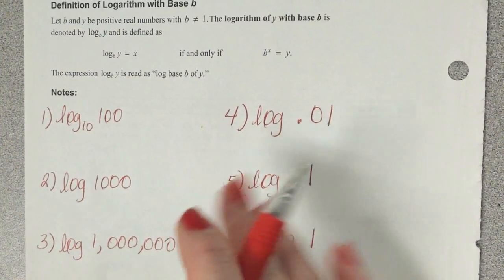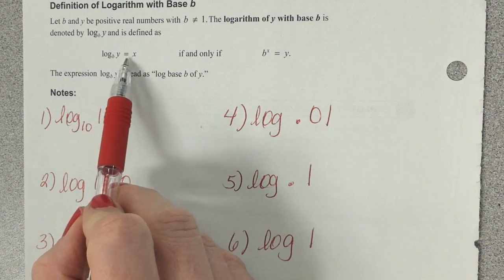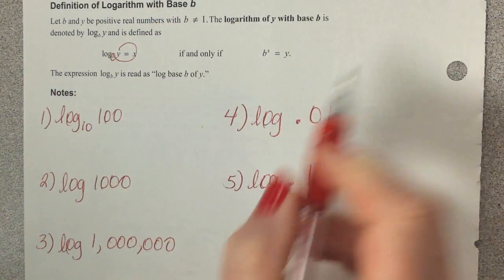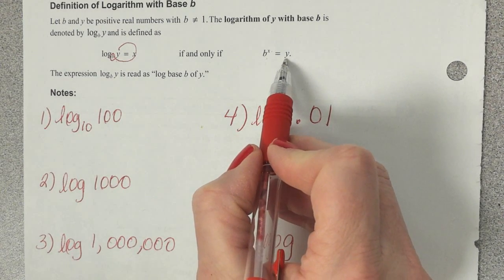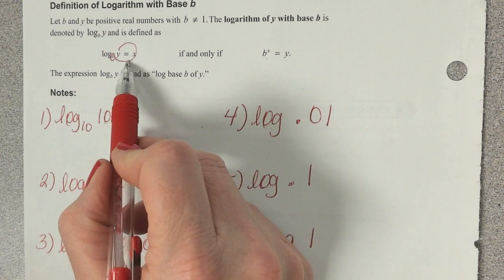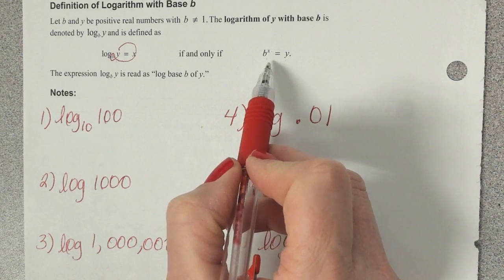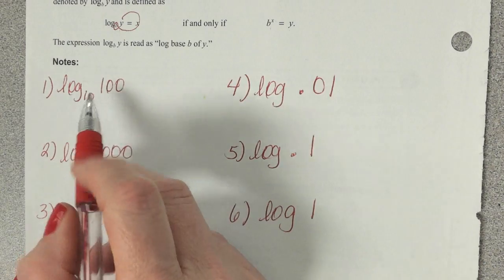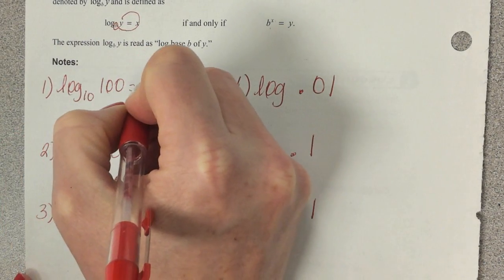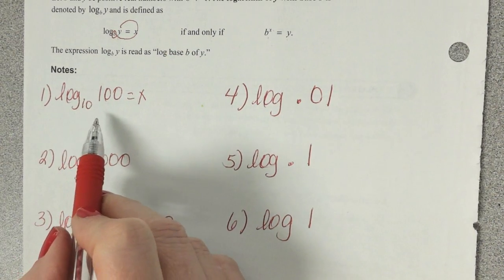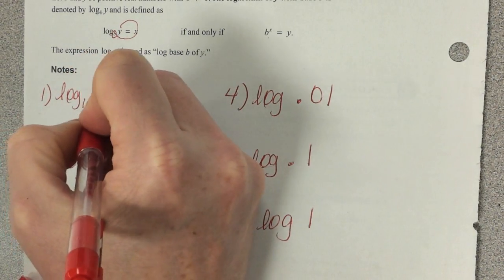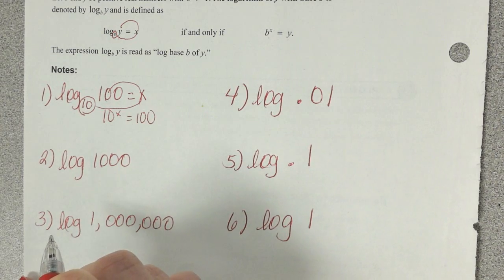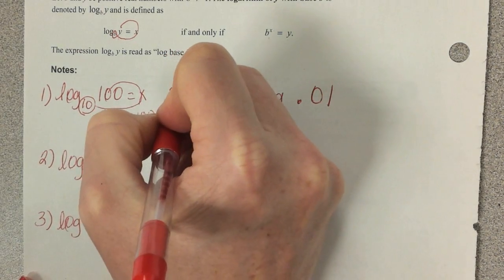So here's the definition of how to switch back and forth. If we have log base B of Y equals X, we find our base. Here's the base B. We can swirl it around now. So it's B to the X equals Y. That's another way of writing it. So if I have a log, I can write it as an exponential, and it's easier to work with then. Because look at this problem. Even if I wrote out the 10, it wouldn't have to be there though. But if I'm going to solve this, this has to be equal to something. Let's just say equal to X. I'm going to rewrite this as an exponential. So I find the base, and I just swirl it around. So 10 to the X equals 100. And what's the answer going to be there? 2. So the answer to this log would be 2.